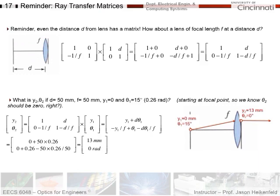So let's assume that we will basically try to figure out y₂, theta₂ for the output of the system. If I start at y₁ equals 0 right here on the z-axis, and my theta₁ is 15 degrees or 0.26 radians, so I'll start right here at y equals 0 and 15 degrees. For this system, I'll assume my lens has a focal length of 50 millimeters. Let's finish the calculation.